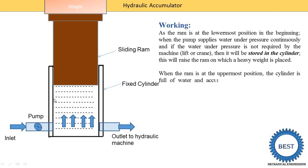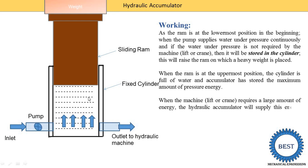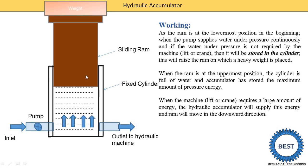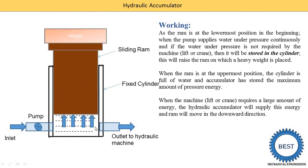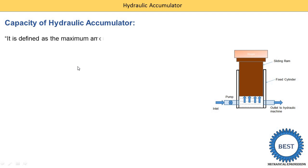When the ram is at its uppermost position, the cylinder is full of water and the accumulator has stored a maximum amount of pressure energy — this is known as the capacity of the hydraulic accumulator. The capacity is the distance the sliding ram moves from its lowermost to its uppermost position. When machines require pressure energy, the liquid stored inside the cylinder starts to supply to different machines like crane and press, and the sliding ram starts moving downward. This is the continuous working of the hydraulic accumulator.